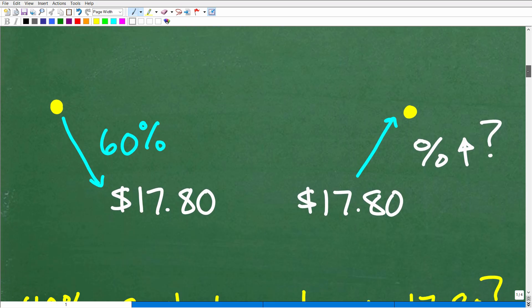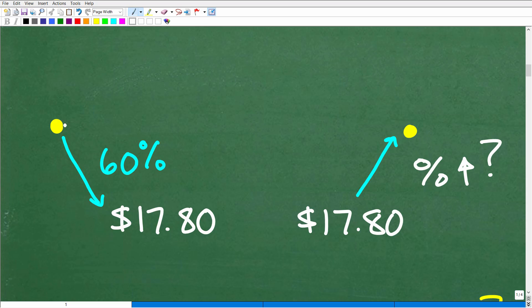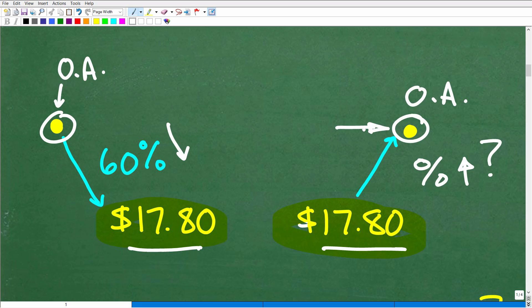Let me show you how I modeled this situation so I can visualize the problem. We had a stock at some price. I know it fell 60%, and after it fell 60%, an unfortunate reduction in its stock price, it's sitting at $17.80. This would be the original amount. It fell 60% to this current amount. But we're hoping this stock will get back to its original amount.